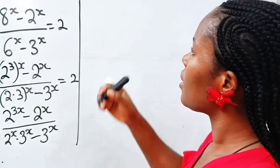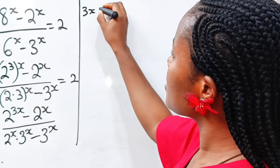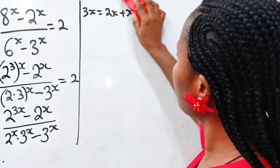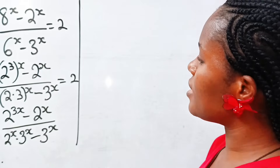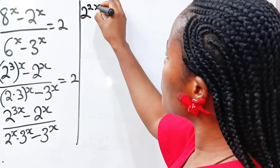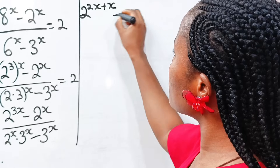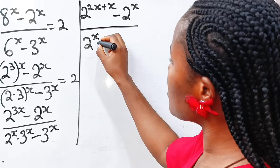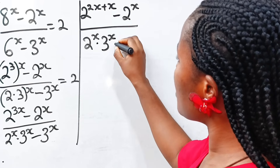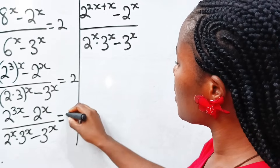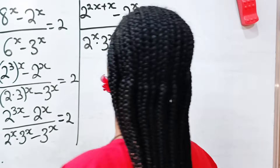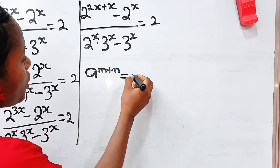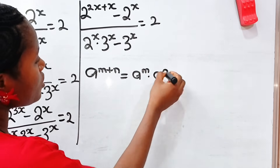Remember, 3x is equal to 2x plus x. So we can write this as 2 to the power of 2x plus x, minus 2 to the power of x, divided by 2 to the power of x multiplied by 3 to the power of x, minus 3 to the power of x. Now, when you have a to the power of m plus n, it is equal to a to the power of m multiplied by a to the power of n.